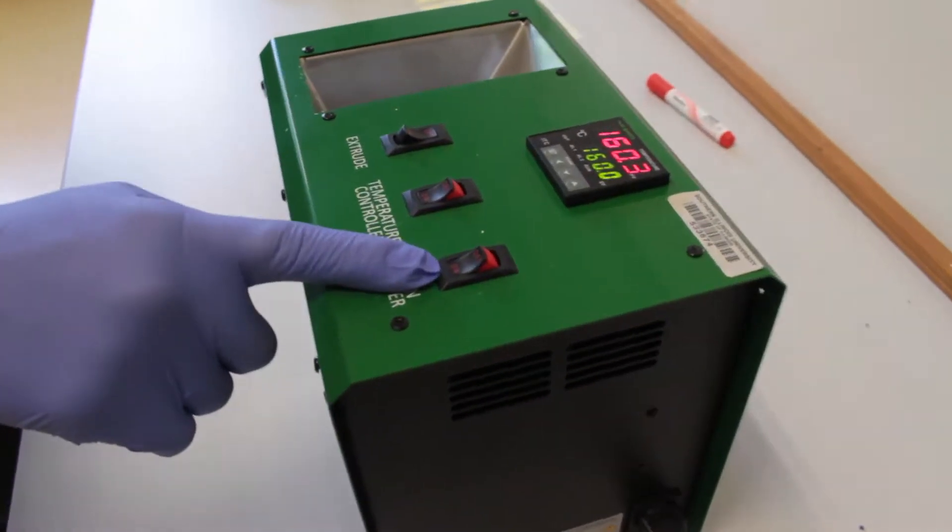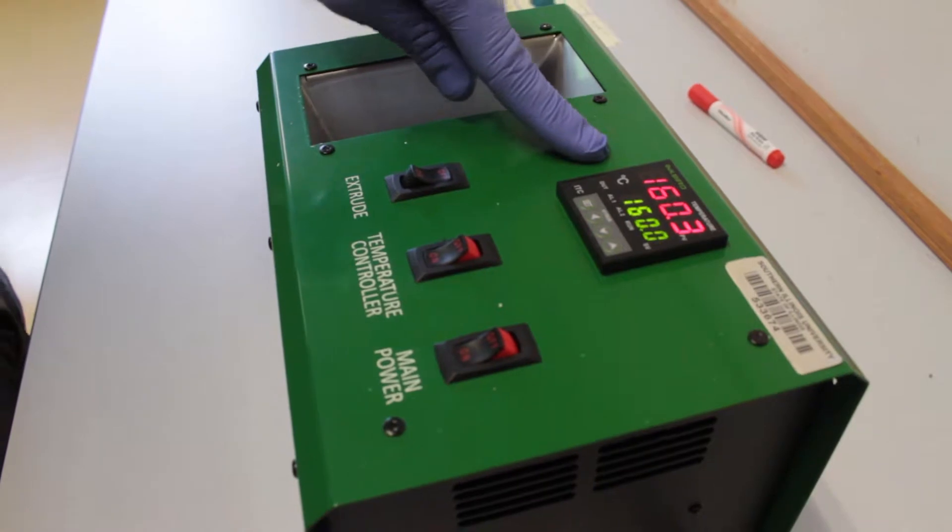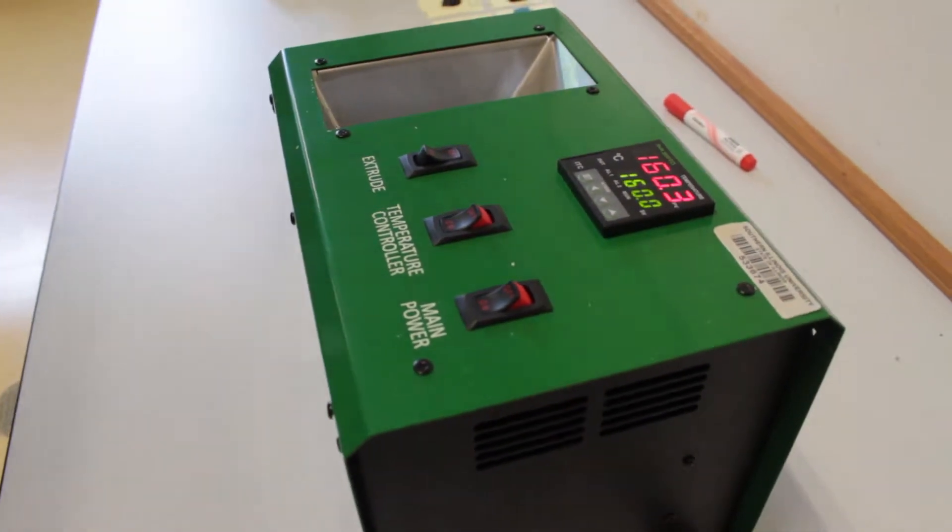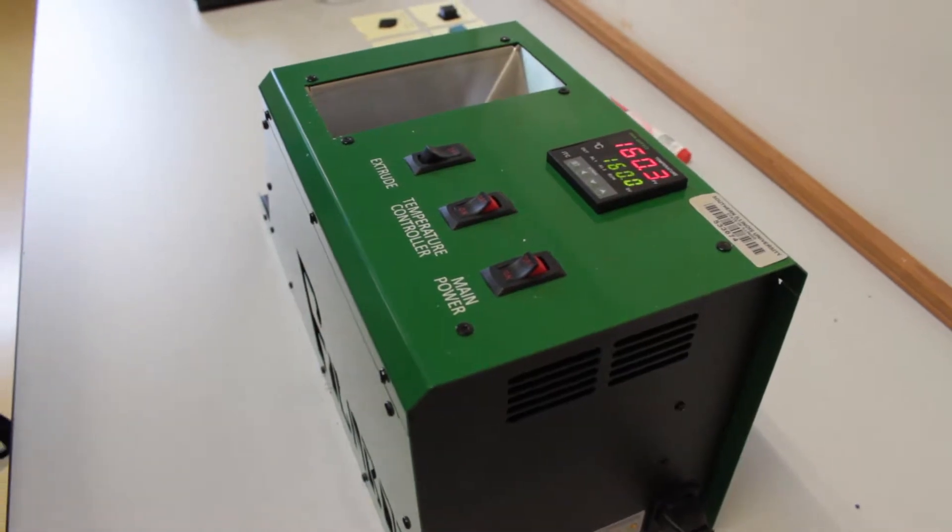We've turned on the main power, turned on the temperature, and let it warm up to 160, which is the temperature that you're going to want your 404 3D PLA recycled mix to extrude at.